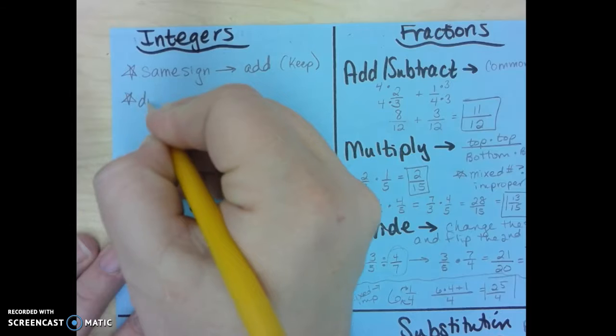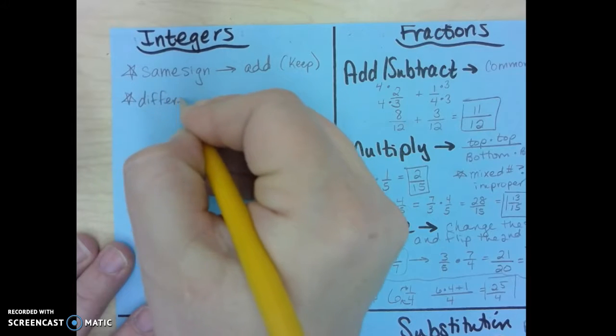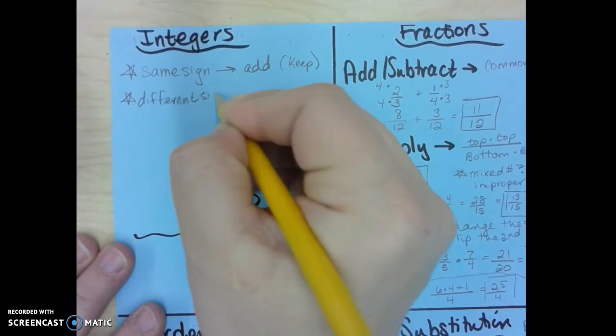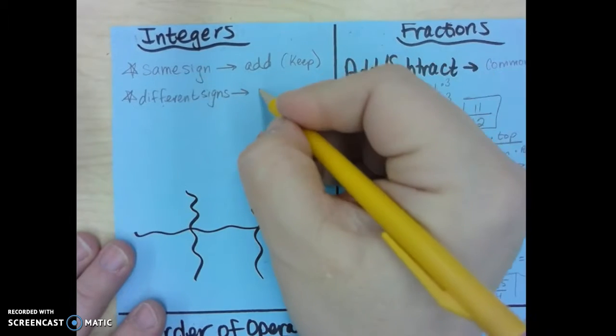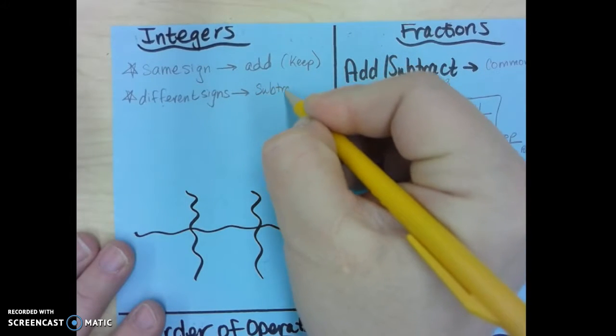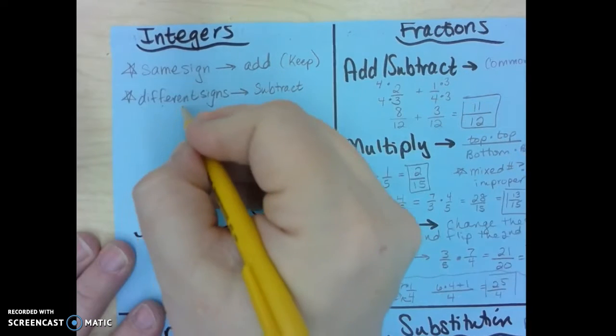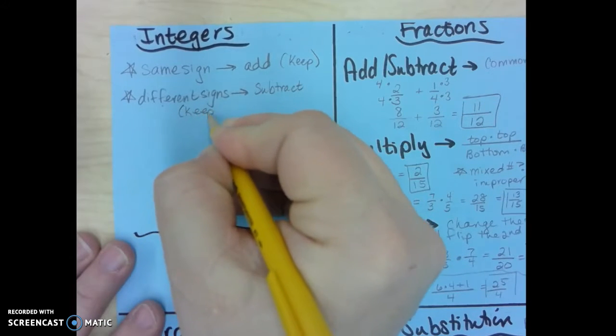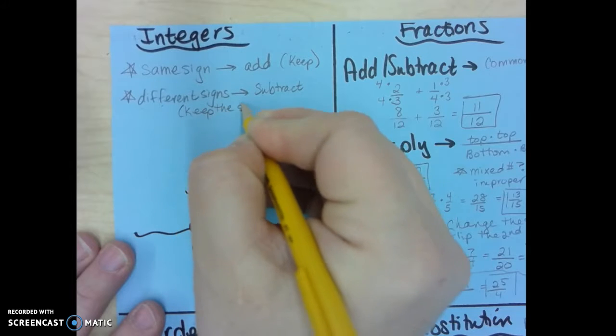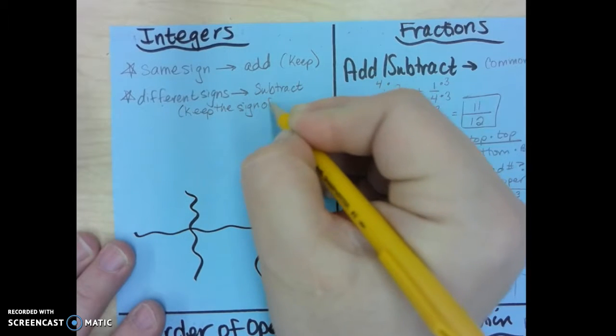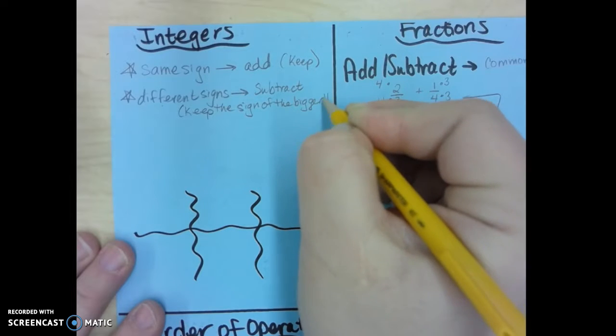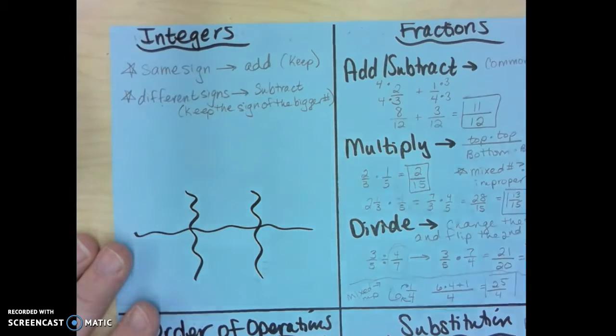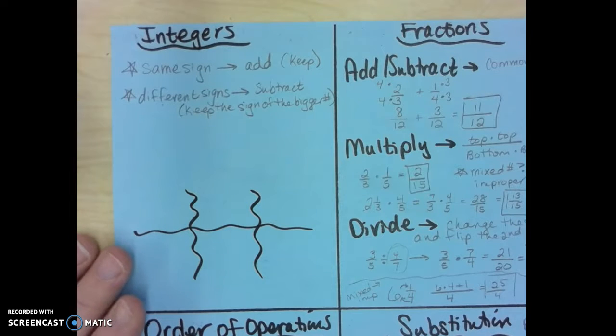The next rule is if I have different signs. Different signs, different is like different, so I'm going to subtract. And this one, you keep the sign of the bigger number. So different signs subtract, keep the sign of the bigger number.